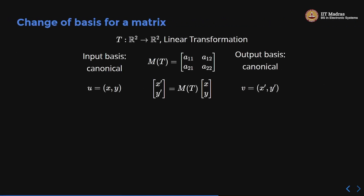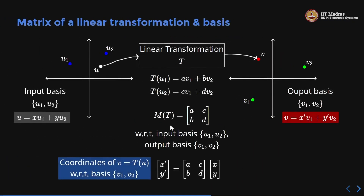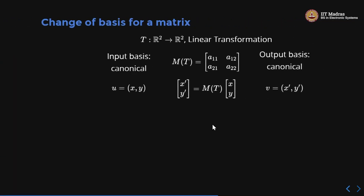Now here is change of basis for a matrix. This matrix is from one basis to another — how is it connected to the canonical basis matrix? The same transformation t will have a different matrix when I change basis. If I make both input and output bases canonical, I get another matrix. How is this matrix connected to the other matrix? That is the question.